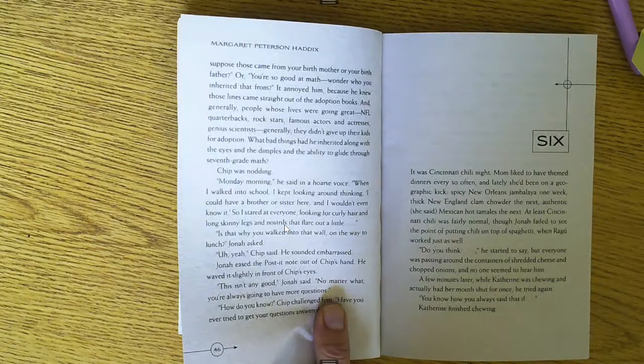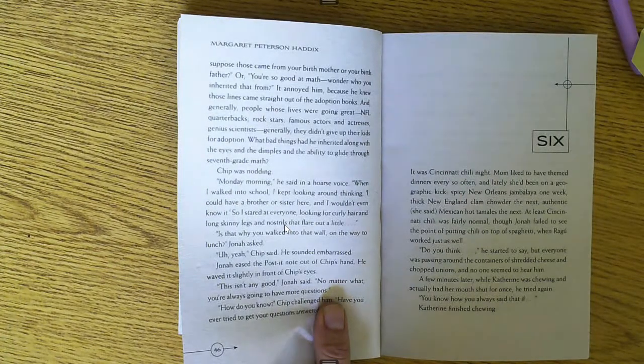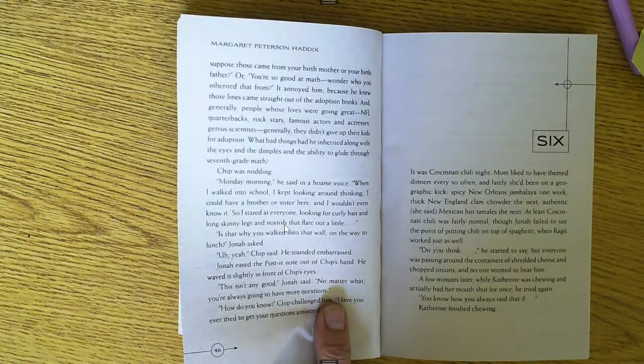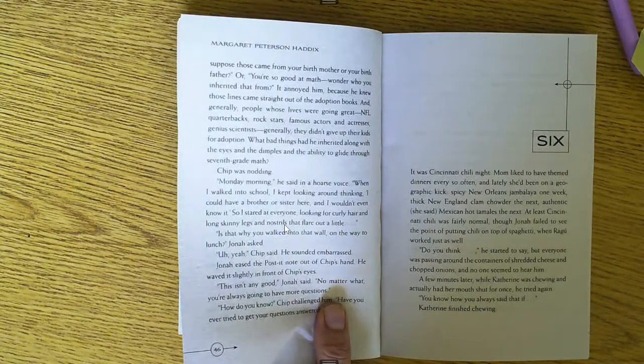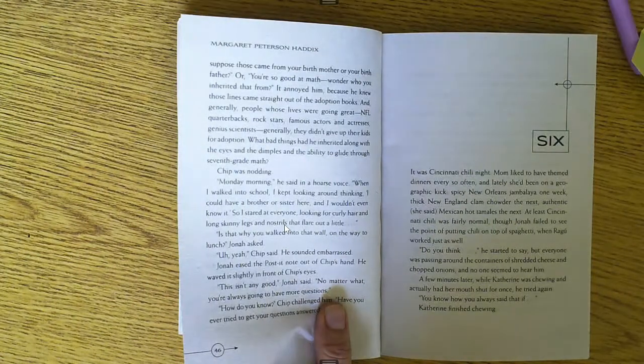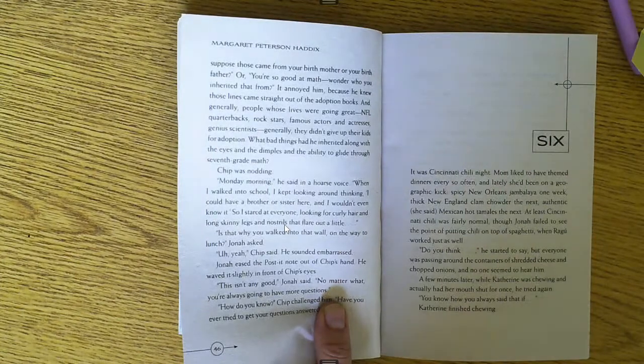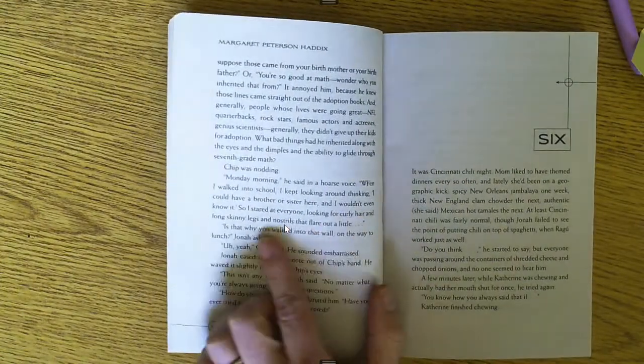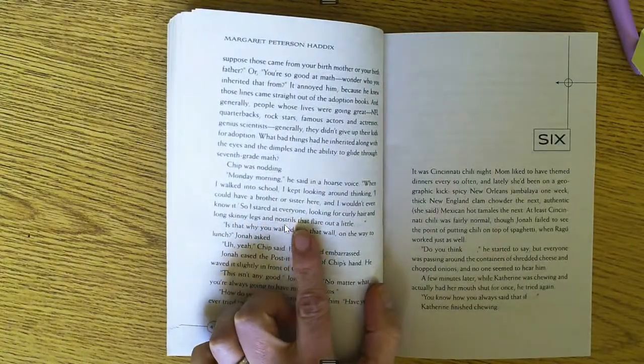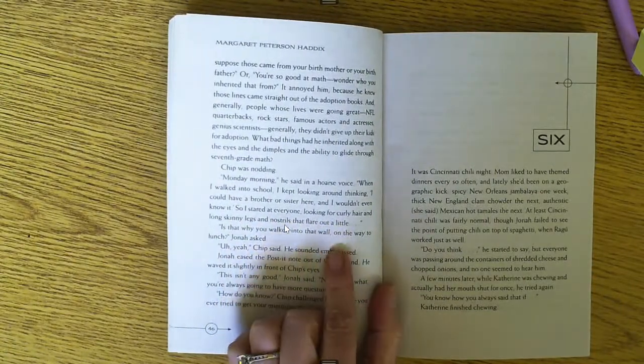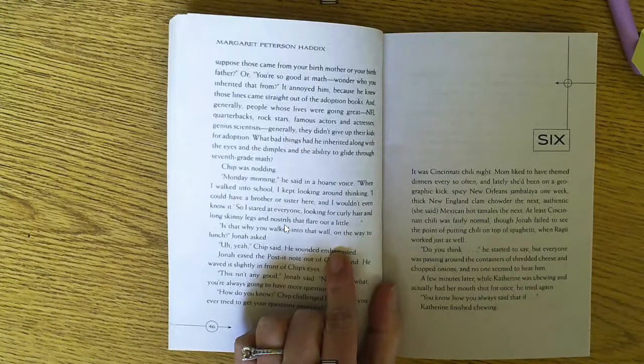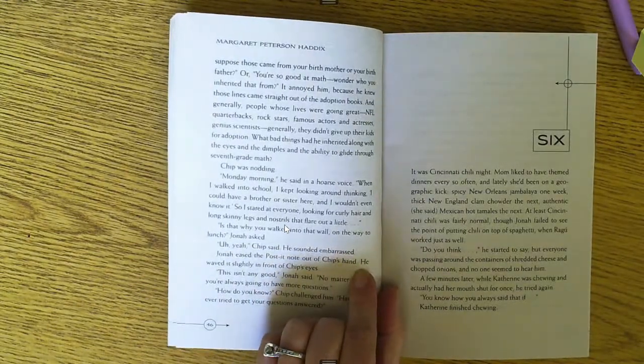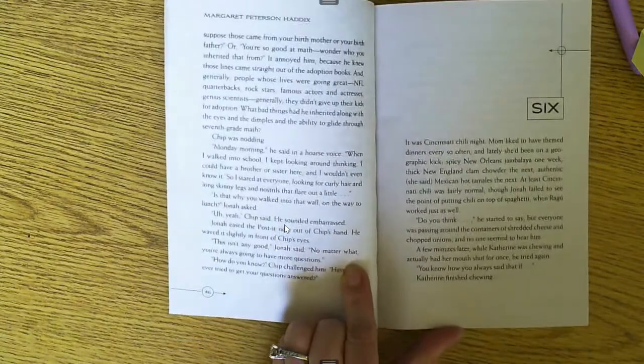Chip was nodding. Monday morning, he said in a hoarse voice. When I walked into school, I kept looking around thinking, I could have a brother or a sister here and I wouldn't even know it. So I stared at everyone, looking for curly hair and those long skinny legs and nostrils that flare out a little. Is that why you walked into the wall on the way to lunch? Yeah, Chip said. He sounded embarrassed.